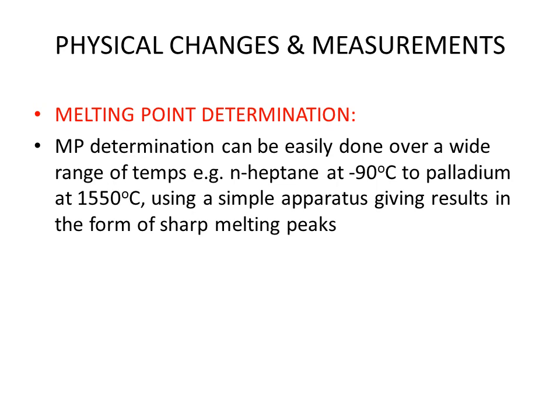First, physical changes and measurements. The first application is melting point determination, which can be easily done over a wide range of temperature — for example, from n-heptane which melts at minus 90 degrees centigrade to palladium at 1550 degrees centigrade. This can be done using a simple apparatus and we get results in the form of sharp melting peaks which indicate the melting point of the sample.